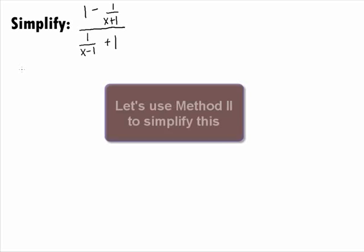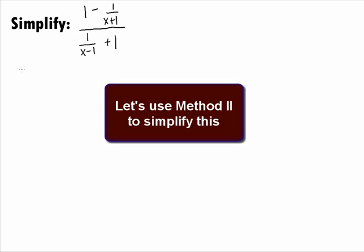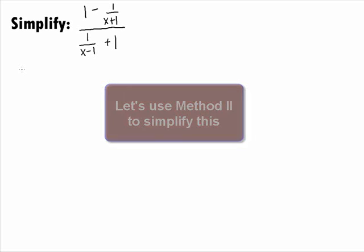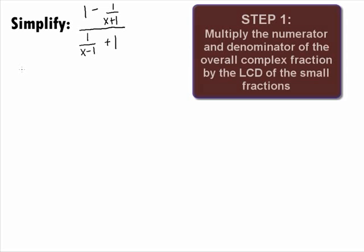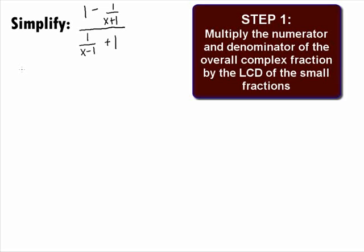Let's go ahead and use what is called Method 2 in this tutorial to simplify this. In Step 1, we want to write the numerator and denominator of the overall complex fraction by the least common denominator of the small fractions.